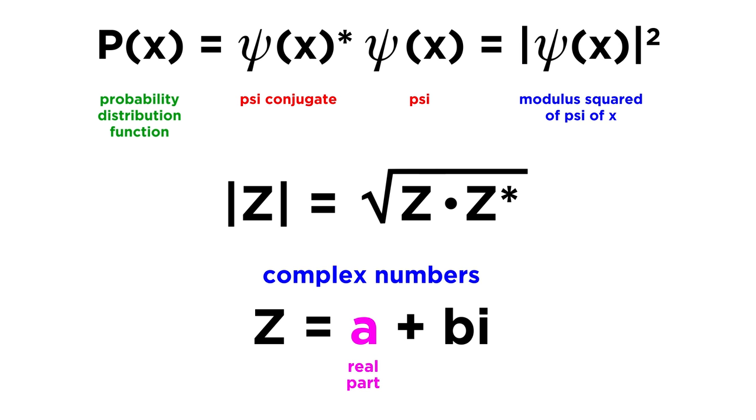In other words, it tells us how many peaks and valleys the wave has over a certain length. Then, x is the position, and omega is the angular frequency, equal to 2pi nu, where nu is the frequency of the wave.